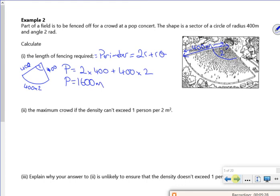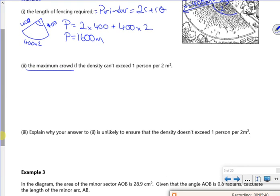Then it says the maximum crowd density can't exceed one person per 2 m². Right, so I need the area first, which is ½r²θ. So that's ½ times 400² times 2. So that's 160,000 metres squared.